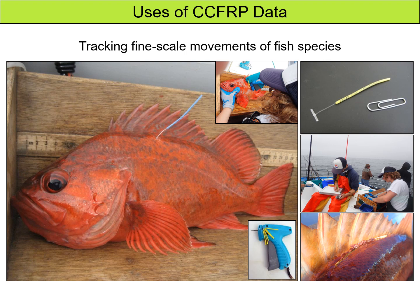One of the main uses of our CCFRP tag recapture data is to track the fine scale movements of different fish species we frequently catch. Here is a picture of a tagged vermilion rockfish before it was released, and a couple pictures of the tagging process and data collection, as well as the small tags themselves and the tool used to tag each fish.